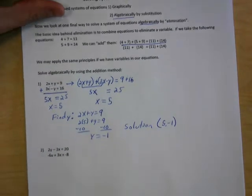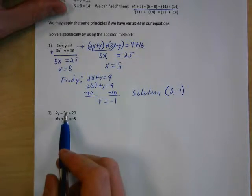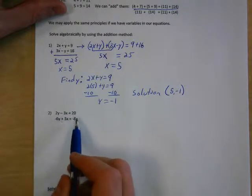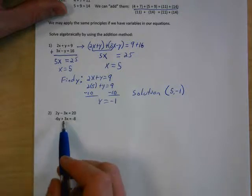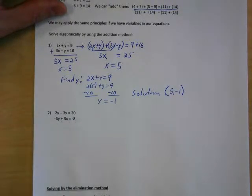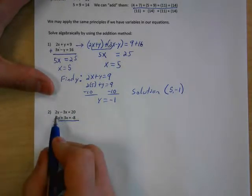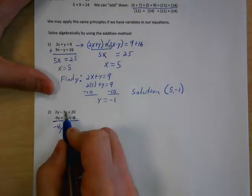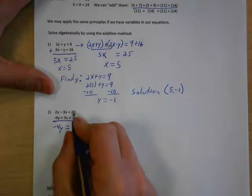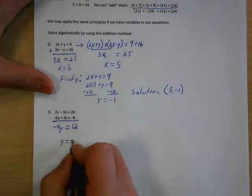For the next example, notice how the y's, x's, equals signs, and constants are all lined up. Adding the equations together: 2y plus negative 6y is negative 4y. Negative 3x plus 3x — they're opposite signs — cancel out to 0. Then 20 plus negative 8 is 12. So we get negative 4y equals 12. Divide by negative 4 and you get y equals negative 3.